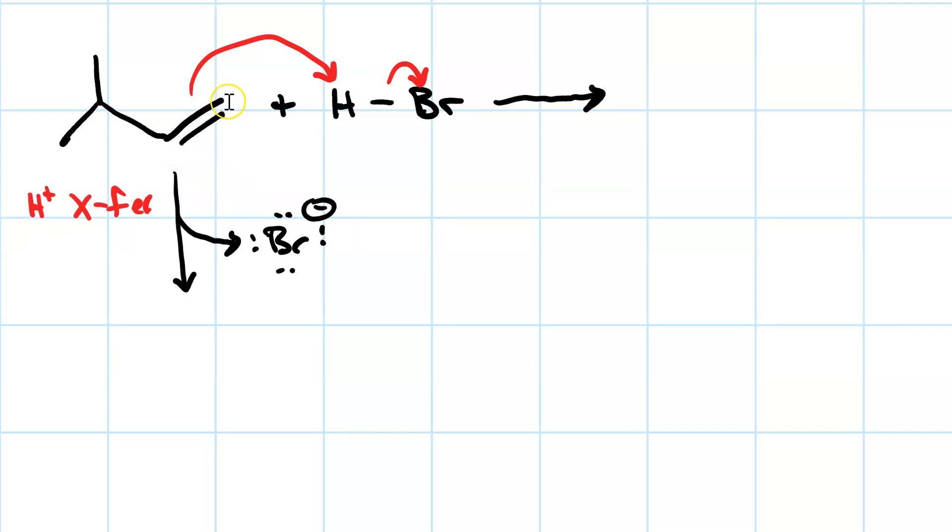And given a choice between having the hydrogen add here to give us a secondary carbocation, or having the hydrogen add here to give us a primary carbocation, it's going to go secondary.